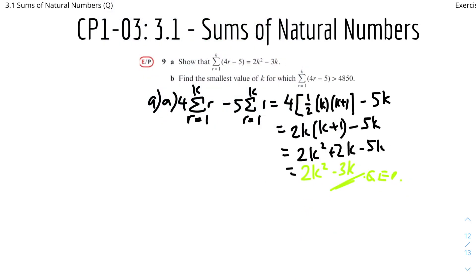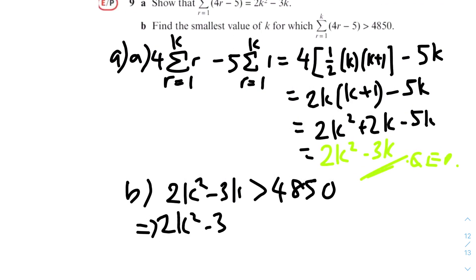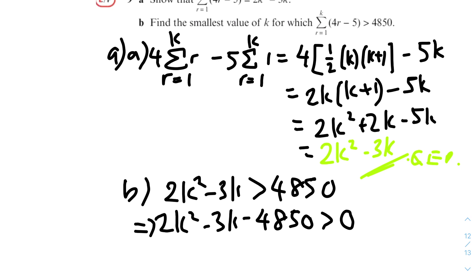Part 2: find the smallest value of k for which this sum is greater than 4850. We know the expression equals 2k squared minus 3k, so we set 2k squared minus 3k greater than 4850. Rearranging: 2k squared minus 3k minus 4850 is greater than zero. Treating it as an equation first and using a calculator: k equals 50 and k equals minus 97 over 2.